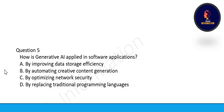Next one, how will generative AI apply in software application? Option A, by improving data storage efficiency, or by automating creative content generation, by optimizing network security, or by replacing traditional programming language. Correct option is option number B, by automating creative content generation. Option B is correct.